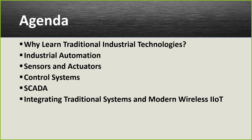Let's take a look at what we're going to cover today. First, why learn traditional industrial technologies? Then we'll get into industrial automation in some detail about what's gone on there historically — sensors and actuators, the roles they play, the control systems including SCADA. And then we'll talk briefly about some questions we need to ask when integrating traditional systems and modern wireless IIoT, or wired IIoT.